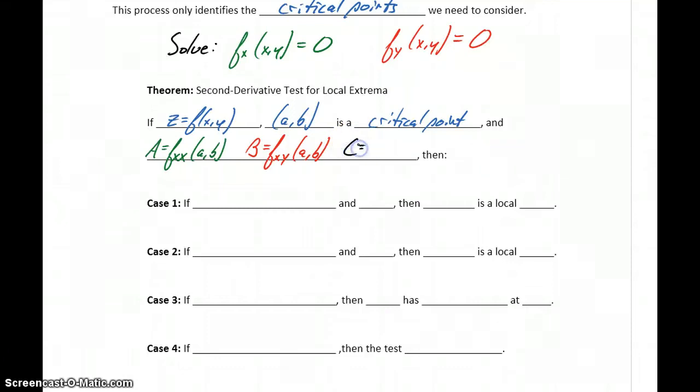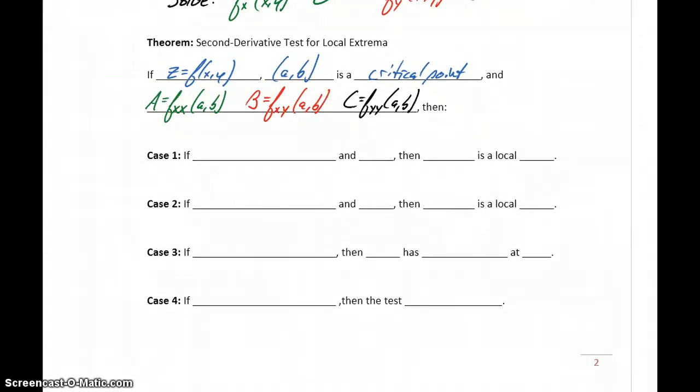And then this value C, which will be the first and second derivatives with respect to y, evaluated at the point (a,b). So we're going to use these values A, B, and C to classify our point, and we'll have three different cases to consider.